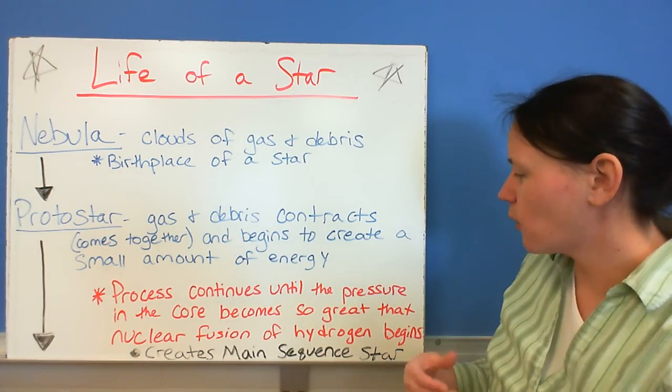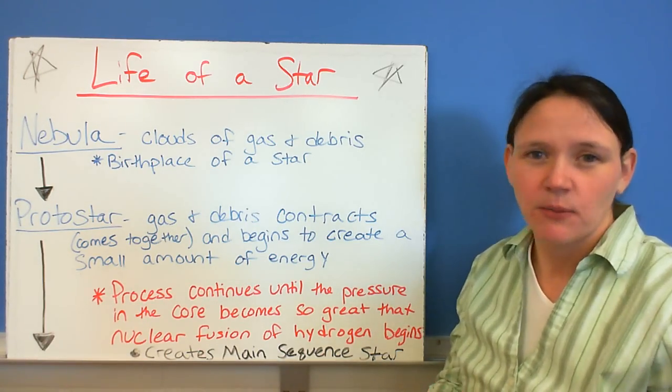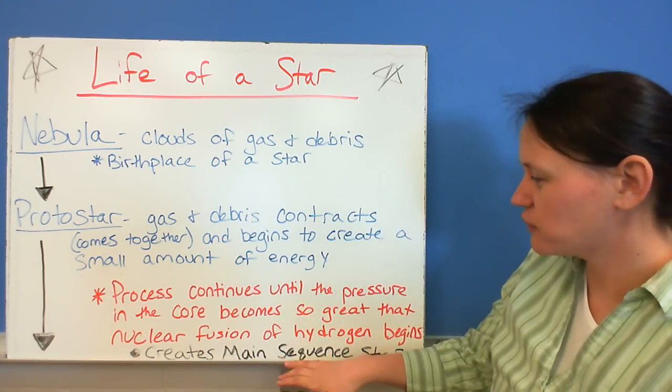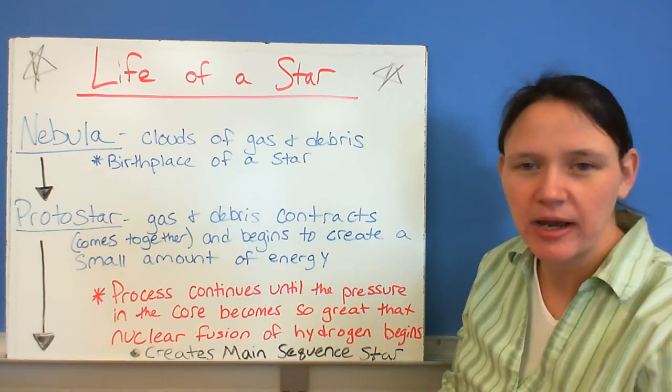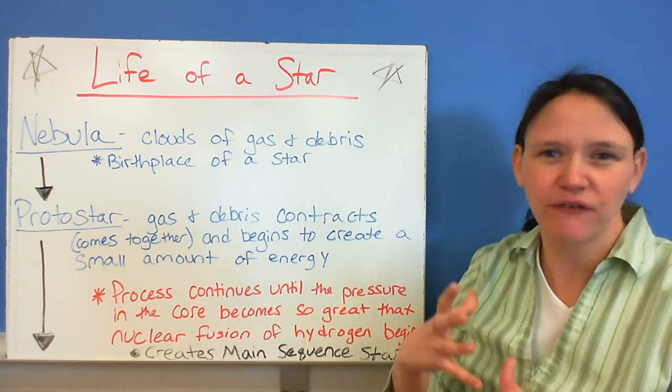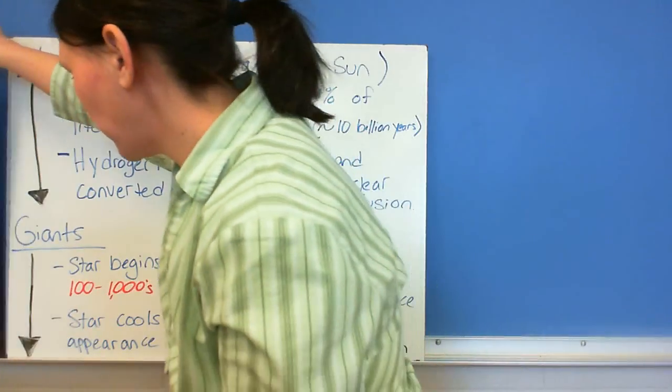That energy in the core actually begins to start nuclear fusion, where you've got hydrogen that starts converting into helium. And that stage right there is what creates the main sequence star. So this is kind of where it starts out. This is the first beginnings of the star, and then you end up into the main sequence stage.